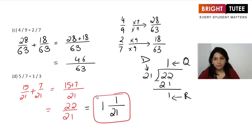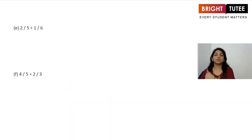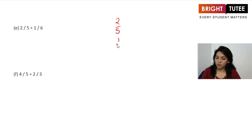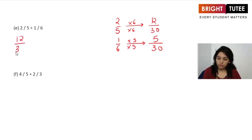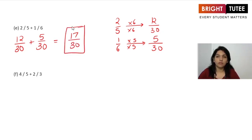Moving ahead: 2/5 plus 1/6. The LCM of 5 and 6 is 30. Multiplying: 2/5 becomes 12/30 and 1/6 becomes 5/30. Adding gives 17/30. Since the numerator is smaller than the denominator, this is a proper fraction and we keep it as 17/30.